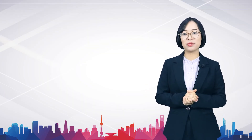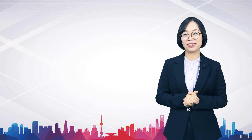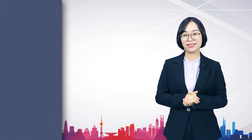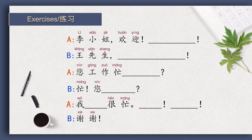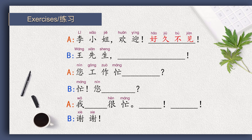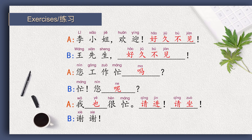Miss Li goes to find Mr. Wang who is working in his office. Please complete the dialogue according to the context. 李小姐,欢迎。 好久不见。 王先生,好久不见。 您工作忙吗? 忙。 您呢? 我也很忙。 请进。 请坐。 谢谢。 Great.